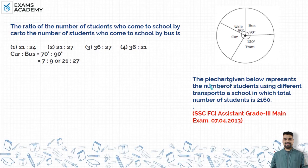The pie chart given below represents the number of students using different transport to a school in which the total number of students is 2160. The question asks for the ratio of the number of students who come to school by car to the number of students who come to school by bus. So car upon bus.